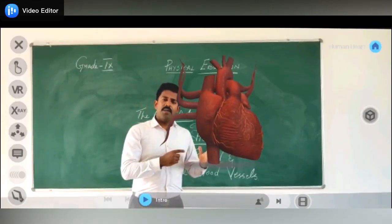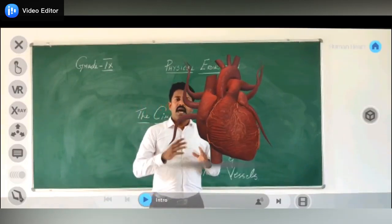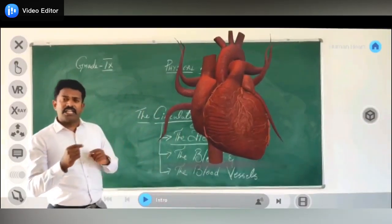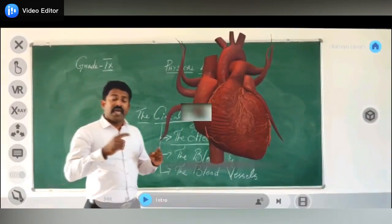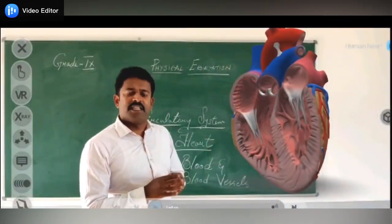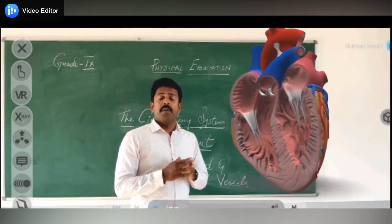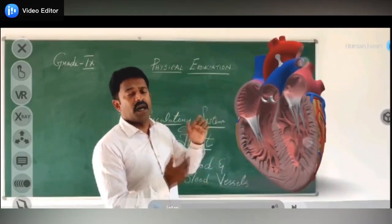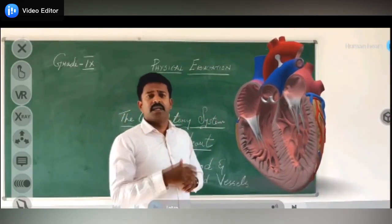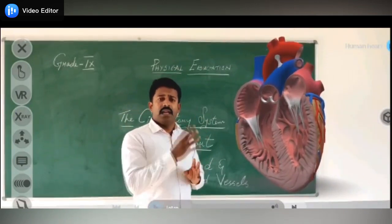In the circulatory system, the heart is one of the major organs which plays a very important role. Before discussing the circulation of blood in the heart, we will see the parts of the human heart. The human heart has four chambers: the right auricle, right ventricle, left auricle,